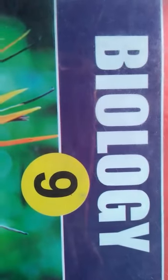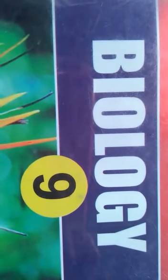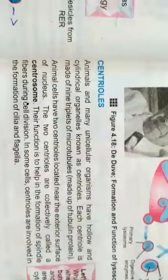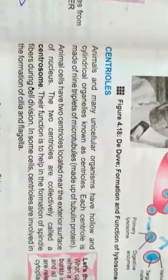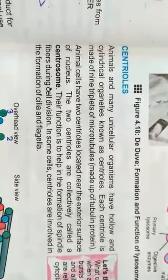Assalamualaikum, biology for class 9th. We are going to study the topic centrioles, page number 65. Animals and many unicellular organisms have hollow and cylindrical organelles known as centrioles. Each centriole is made of 9 triplets of microtubules.